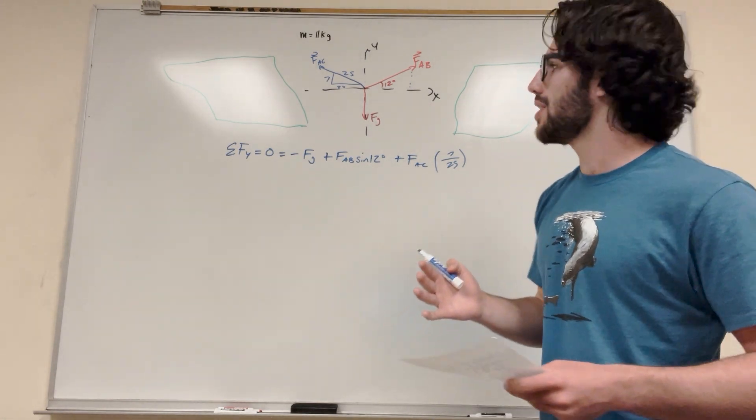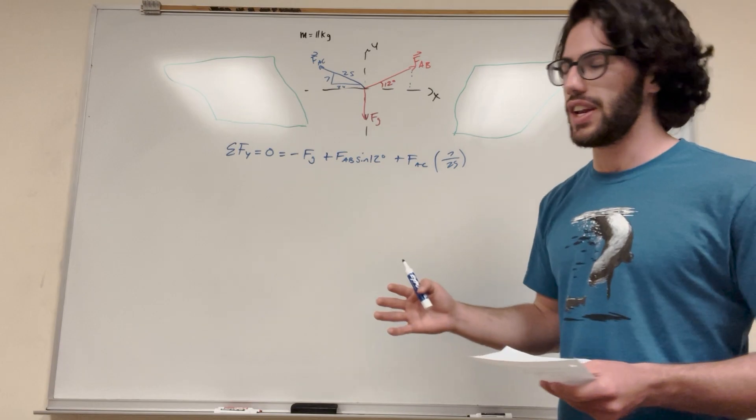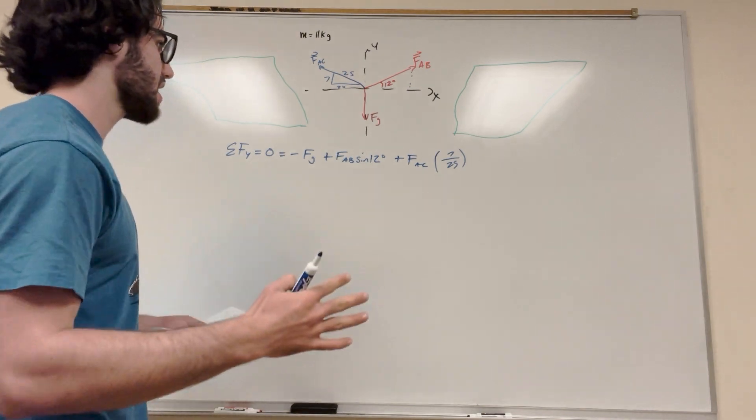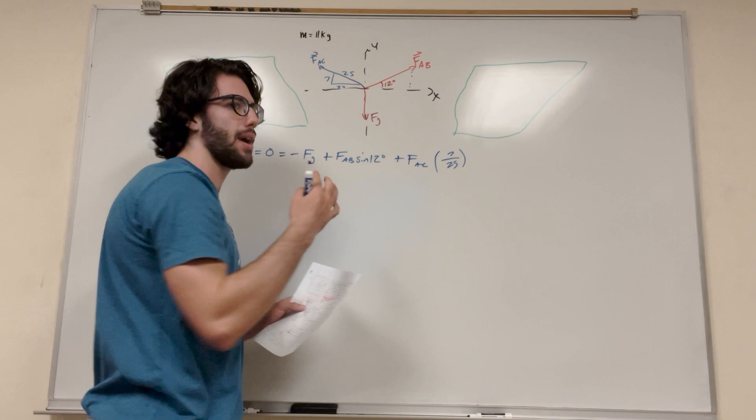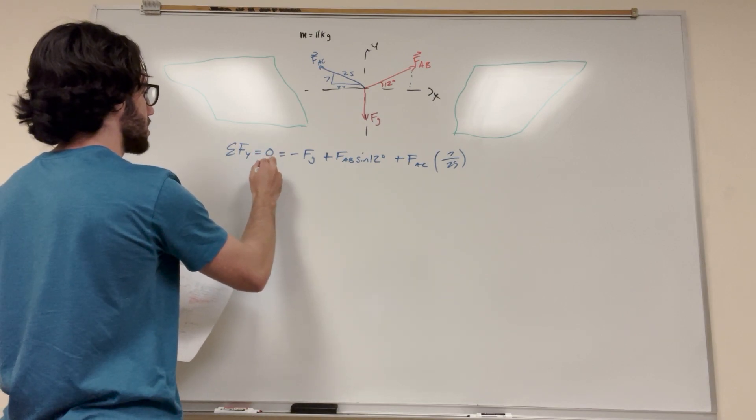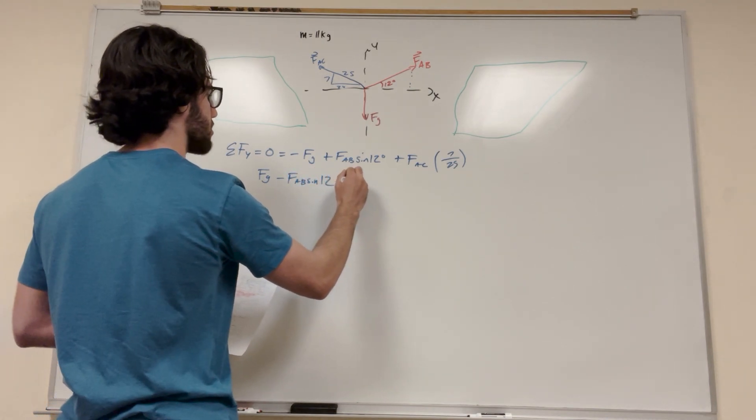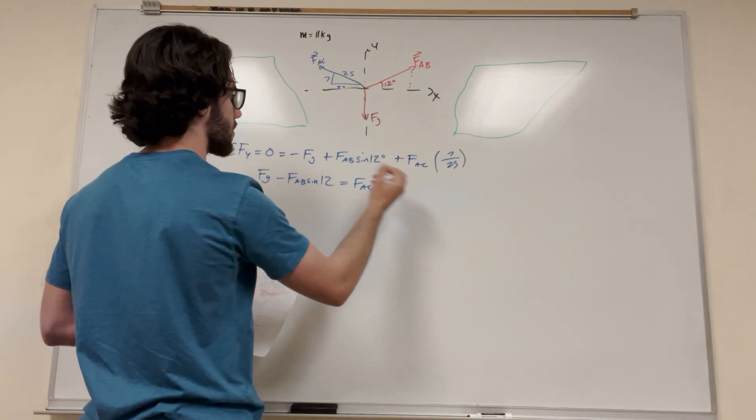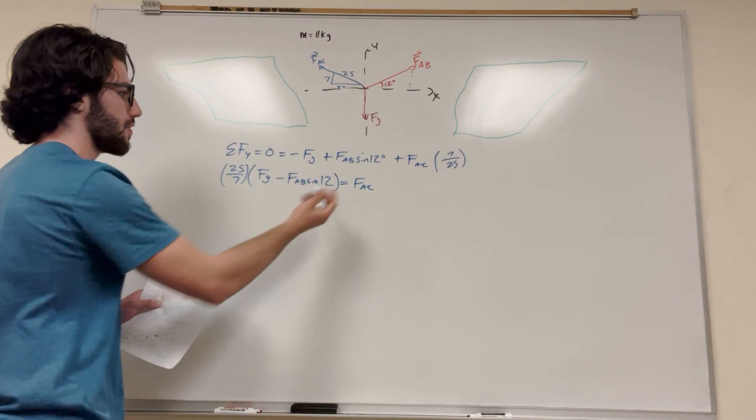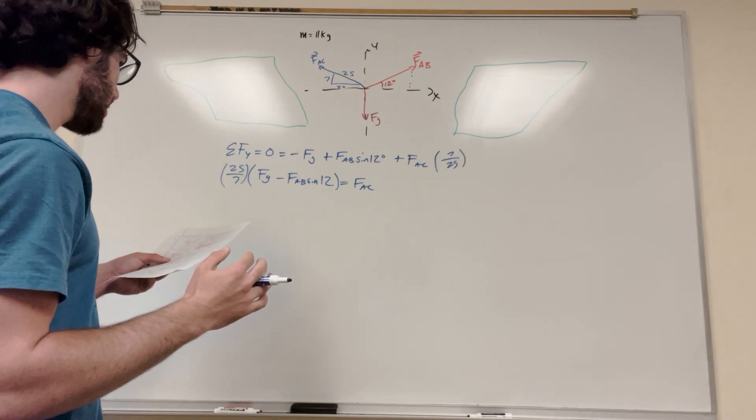So what we want to do now is we want to isolate a variable. Right now, it's not going to make sense why we're going to do that, but later on, we're going to need to have one variable by itself just for the convenience factor. So in my notes, there's many ways you can do this. You can isolate one variable at a time and do the other one, but I'm going to isolate force AC. I want to get this force AC by itself and everything else on the other side of the equation. So let's do that. I'm going to move force gravity over and move force AB over. So it's going to be force gravity, because it becomes positive, minus force AB sine of 12 degrees is equal to force AC. And then the 7 over 25, I'm going to multiply that over, so it's going to become 25 over 7 times all of this is equal to force AC. So there we go. We've got force AC by itself.